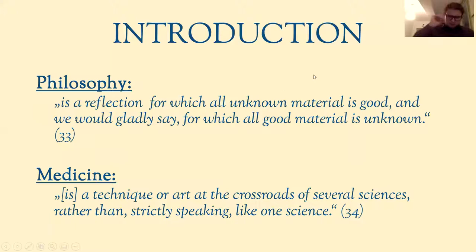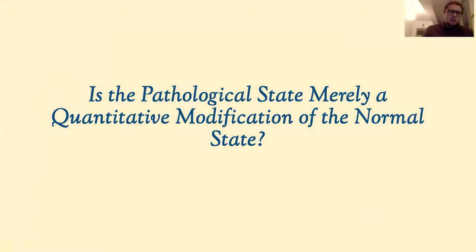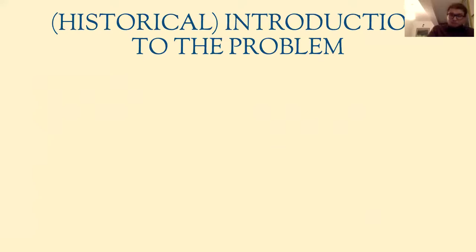There are two interesting citations here. The first is about philosophy, the second about medicine. The second is self-explanatory given the three points I've just mentioned. Philosophy is a bit less clear in what he wants to say — I can sense where he wants to go but can't really explicate it well. Perhaps we could talk about it later. The main question that concerns the first part of the book is: is the pathological state merely a quantitative modification of the normal state?